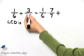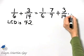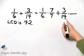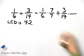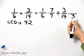But let's go ahead and work on 3 over 14. And I ask myself the same question. 14 times what gives a product of 42? Well, 14 times 3 gives a product of 42.